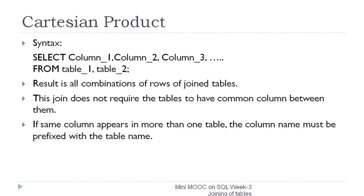The syntax of Cartesian product is: SELECT column1, column2, column3, ... FROM table1, table2. The result will be the Cartesian product of all rows of the joined tables. Note that Cartesian product does not require the tables to have common columns. If the same column appears in more than one table, the column name must be prefixed with the table name to resolve ambiguity.